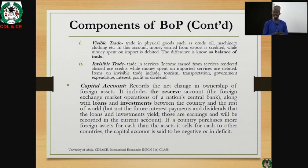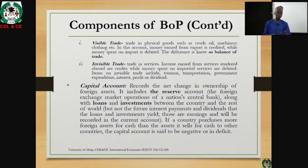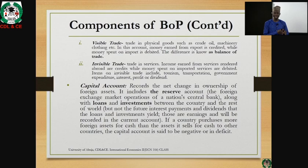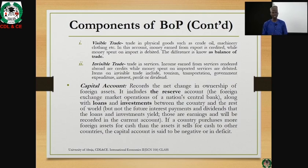Visible trade is the trade in physical goods and services — for example, crude oil, machinery, clothing, and so on. All trade in visible commodities are regarded as the first component of the current account. In this account, money earned from exports is credited while money spent on imports is debited. This is known as the balance of trade, which is the record of all transactions that has to do with visible trade at a point in time, usually one year.